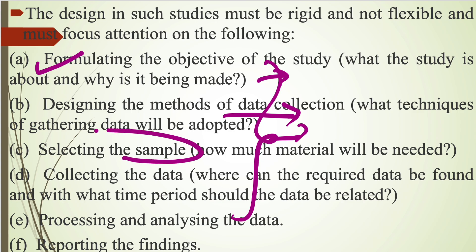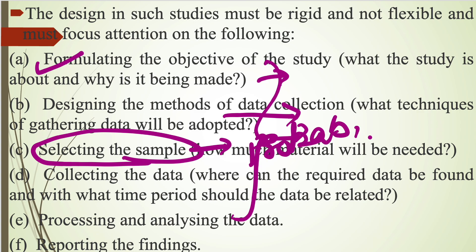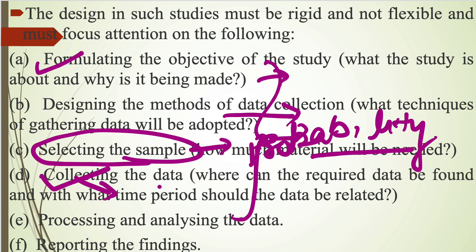The third step is selecting the sample — sample selection is predefined in this case using probability sampling methods. The fourth step is collecting the data, done through structured questionnaires or structured interviews within a limited time period — determining where required data can be found and within what time period it should be collected. Fifth is processing and analyzing the data, where the researcher processes data using various techniques to find results. All these steps should be predefined in descriptive and diagnostic research studies.